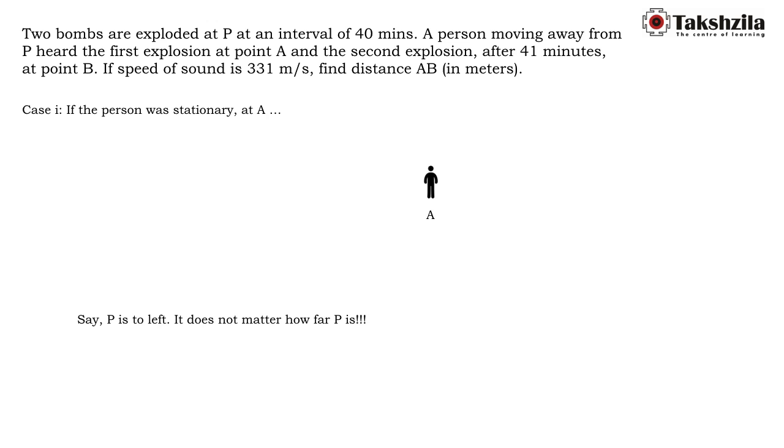One common error that happens is people understand that 40 minutes to be the time taken from place of explosion to A. It is not so. The sound does not take 40 minutes from P to A. 40 minutes is the interval between the explosions. So the explosion might be taking very far away, somewhere very far away to the left. The bombs are exploded and the sound wave travels and they reach me.